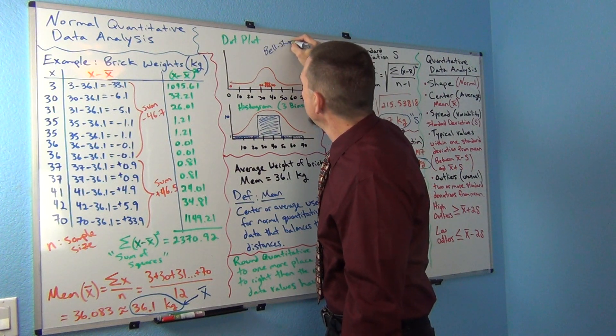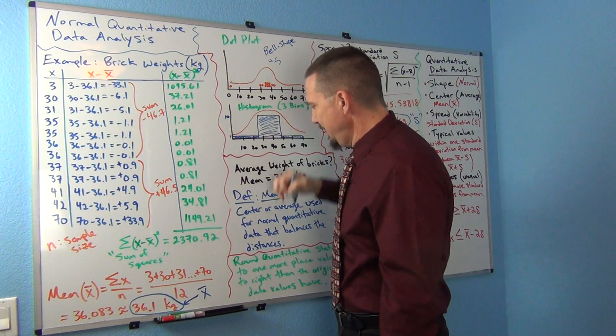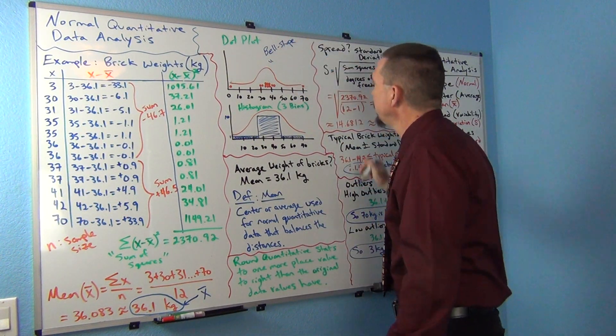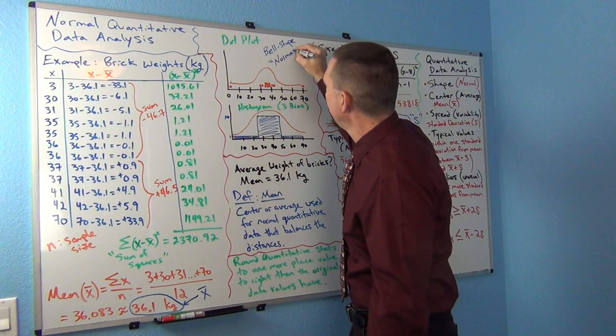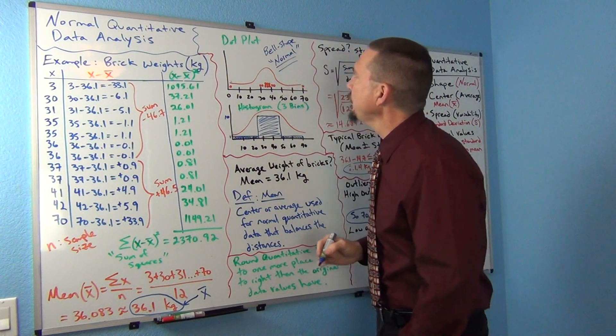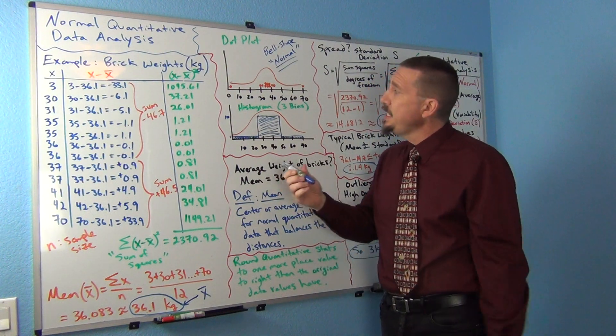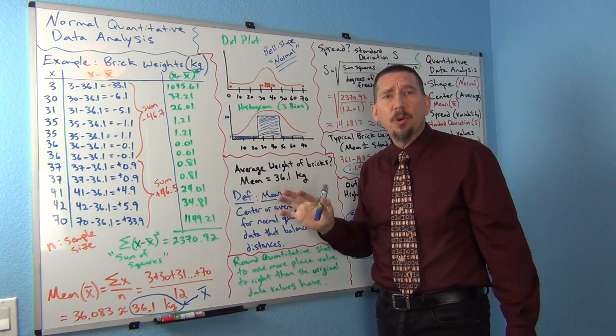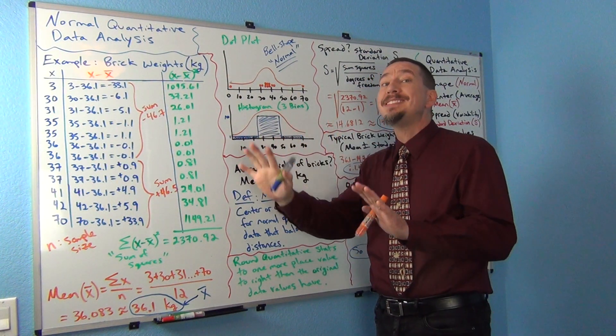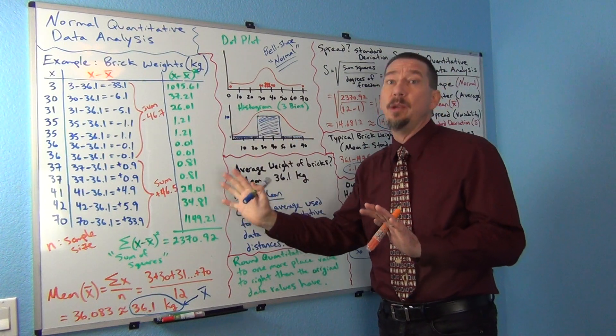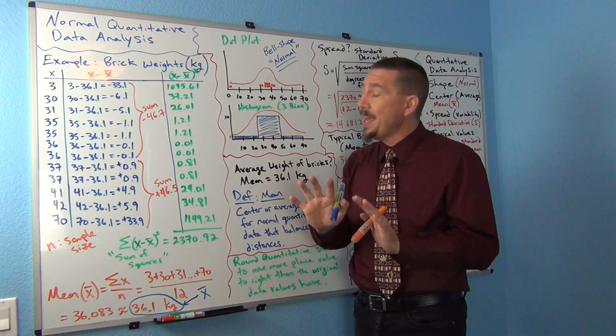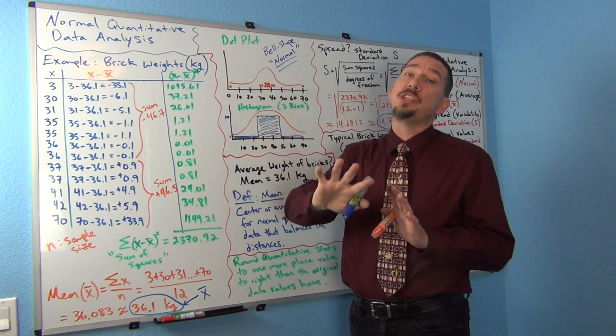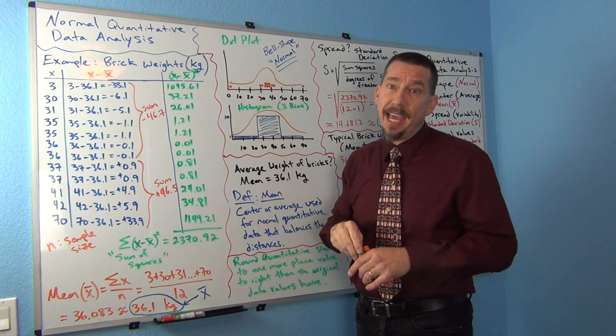So sometimes you'll hear people say bell shaped. But in stats, we usually don't say bell shaped. We say normal or normally distributed. That's the shape. So this data has sort of an almost normal shape. That's really important because the shape determines what statistics are actually accurate and what statistics are not accurate. That's why you always find the shape first. So once you find the shape, then you'll know which statistics are actually accurate.